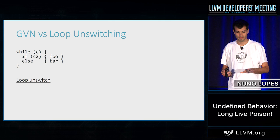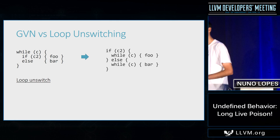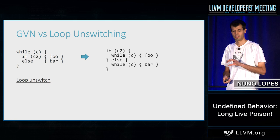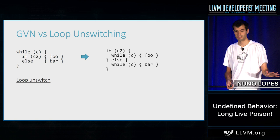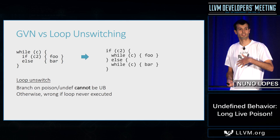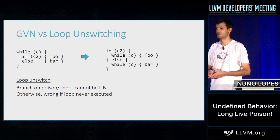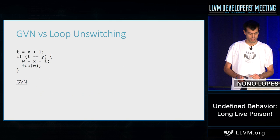GVN and loop unswitching require slightly different semantics for the IR. Loop unswitching hoists an if condition out of the loop, meaning in the transformed program we evaluate C2 before C. This means branch on poison cannot be undefined behavior — otherwise we'd introduce undefined behavior if the loop never executes. For loop unswitching, it seems that branch on poison has to be some sort of non-deterministic choice between the two branches.